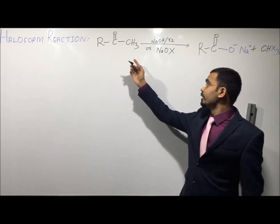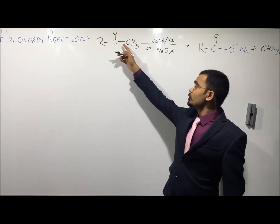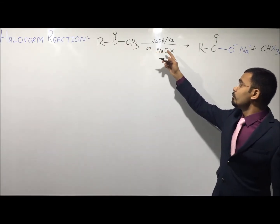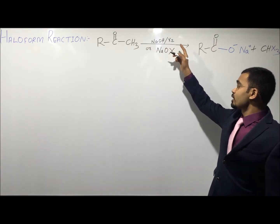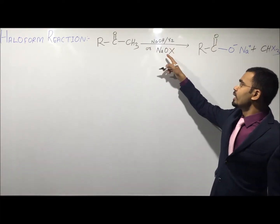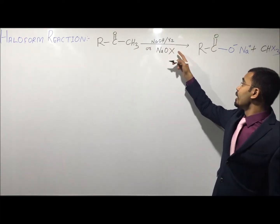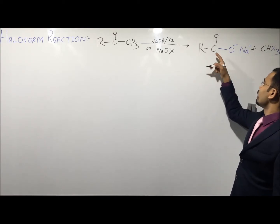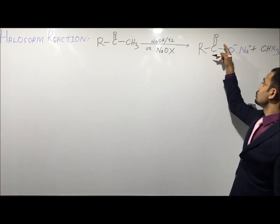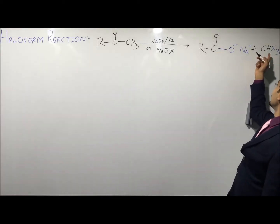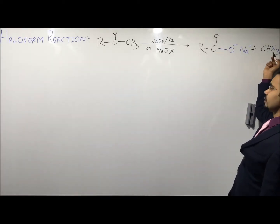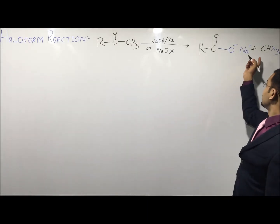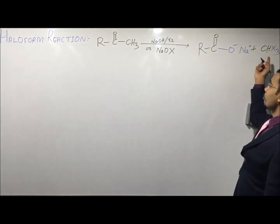The haloform reaction is: RCOCH3 will react with NaOH/X2 or NaOX to give the sodium salt RCOO- plus CHX3, which is the haloform product.